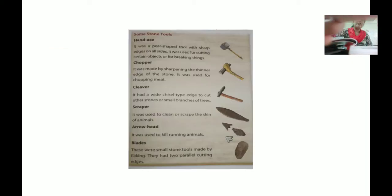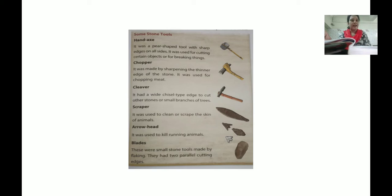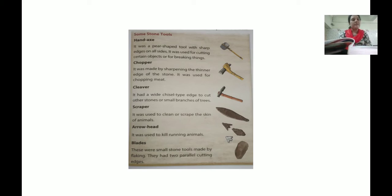Here I will show you a picture. These are all weapons made by stone: hand axe, chopper, cleaver, scraper, arrowhead, and blades. These weapons were made from wood and stone and were used for different purposes — wood cutting, tree cutting, hunting, scraping animal skin, cutting fruits, and other activities.